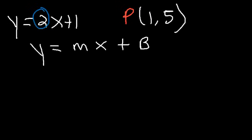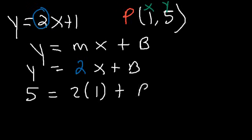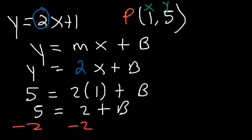So the slope of the line we're trying to find also has a value of 2. Let's replace m with 2. Now what we need to solve for is b, the y-intercept. So let's plug in x and y — replace y with 5 and x with 1. So we have 5 is equal to 2 plus b. To solve for b, we need to subtract 2 from both sides. So 5 minus 2 is 3, so b is equal to 3.